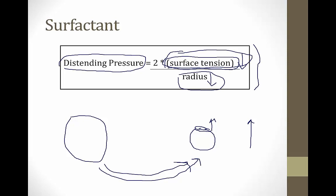The key points are that smaller alveoli take more pressure to keep open and are more likely to collapse, but this is avoided by production of surfactant by the type 2 alveolar cells, which lower the surface tension to offset the effect of the shrinking radius during exhalation.